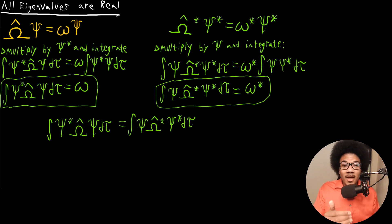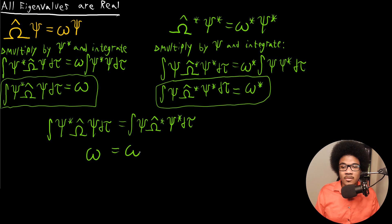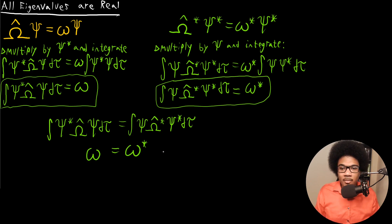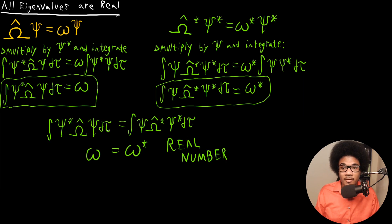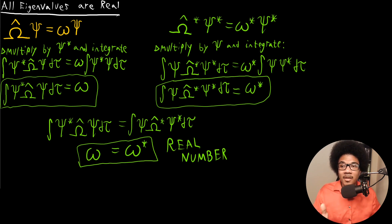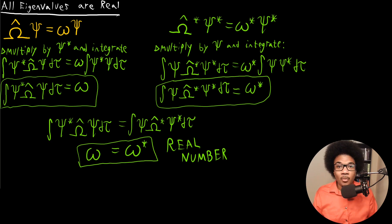So what does that imply? That implies that these two eigenvalues are equal. This first integral is equal to omega, and the second integral is equal to omega star. The only way a number can be equal to its complex conjugate is if it is a real number. So we've proven that as a direct consequence of the fact that this operator is Hermitian, these eigenvalues must be real. This basically proves that if the operator omega is Hermitian, as all quantum mechanical operators are, then it must have a real eigenvalue.